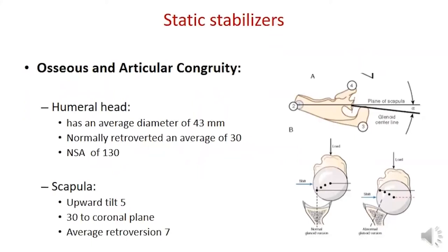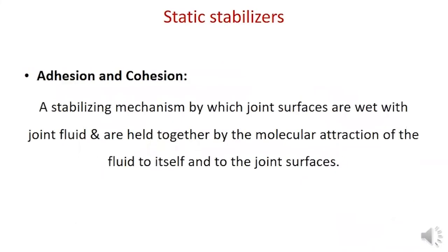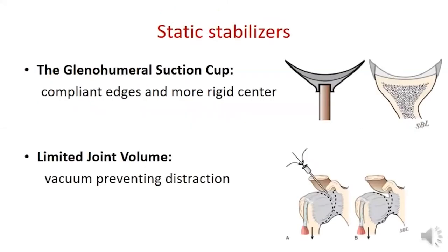The osseous and articular congruity contributes to static stabilization by directing the net reaction force toward the glenoid arc. The adhesion-cohesion mechanism also contributes by molecular attraction of fluid to itself and to the joint surfaces. The glenohumeral capsule establishes a limited joint volume, so distraction of the humeral head produces a relative vacuum within the capsule that resists further displacement.